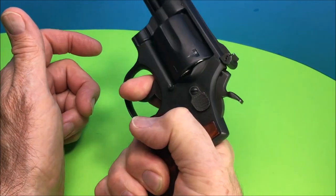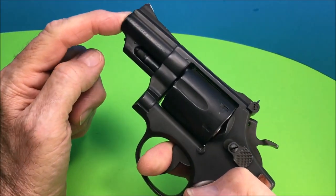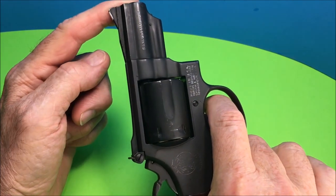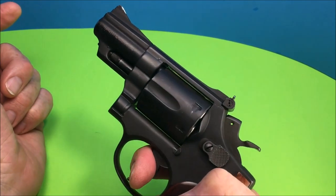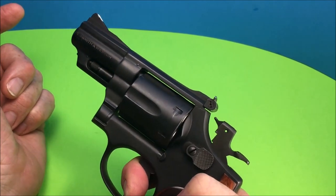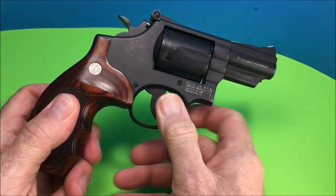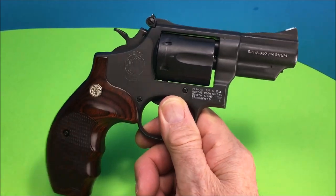This gun has got some weight to it, this is a K-frame 357 Magnum, it's not light. It's very popular, great looking gun, just really nice, well balanced, I think two and a half inch barrel is just right.